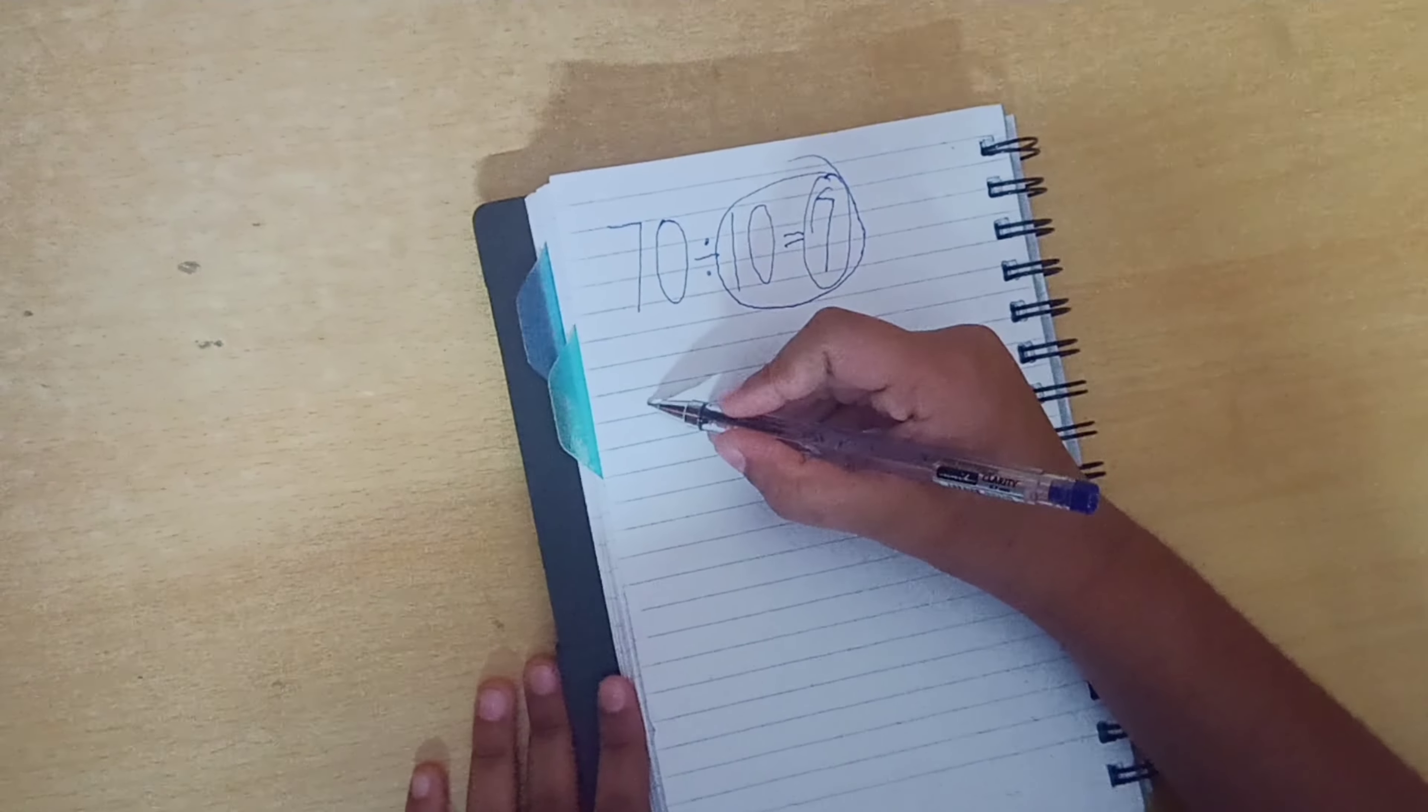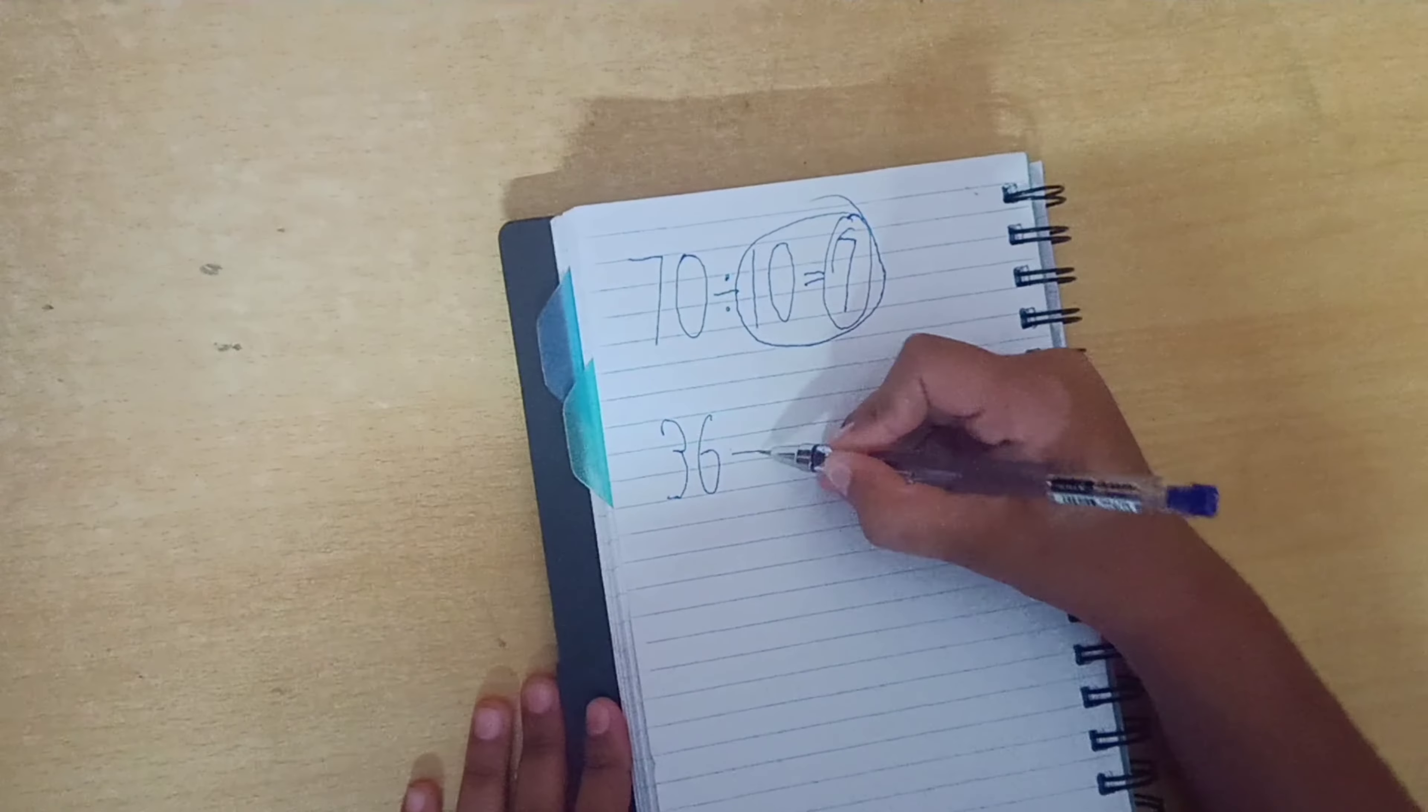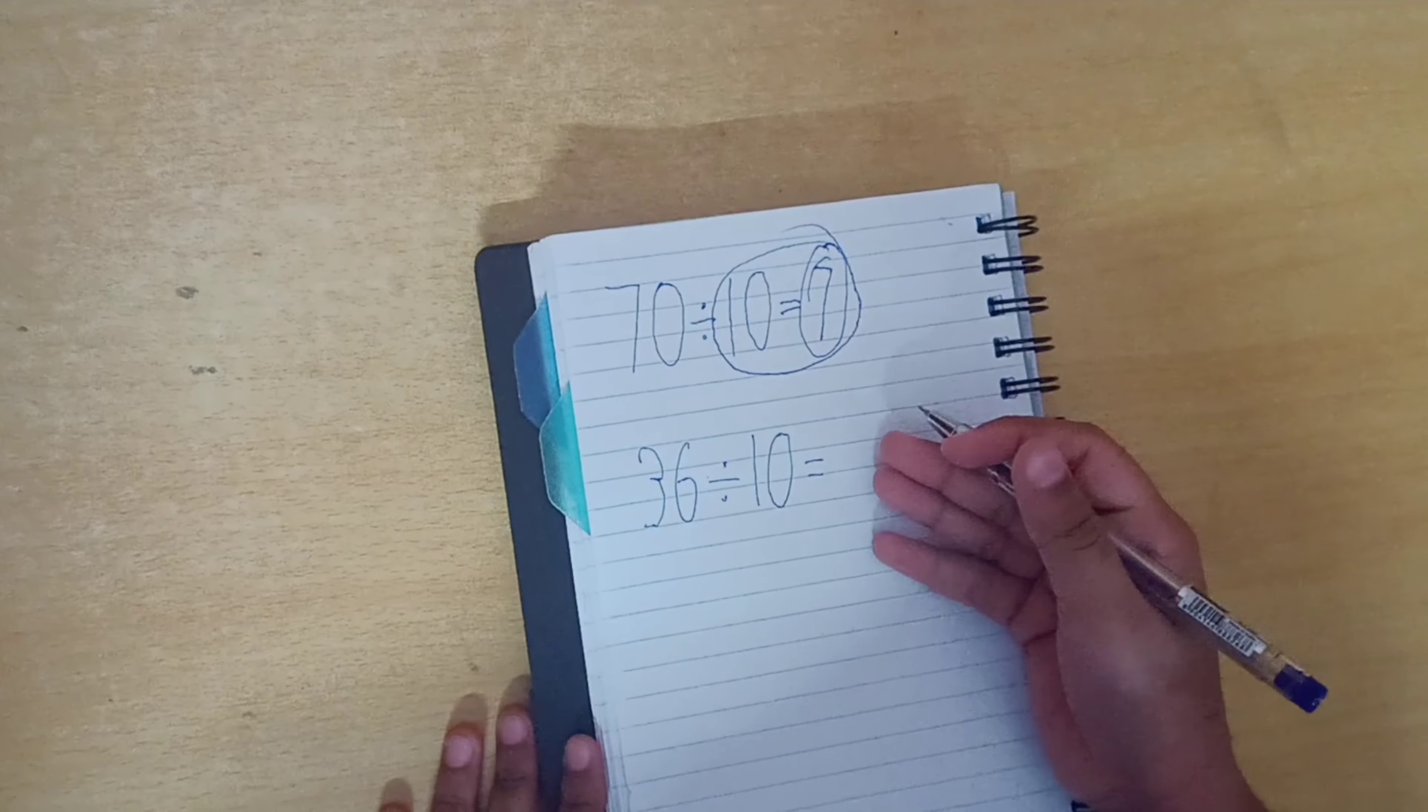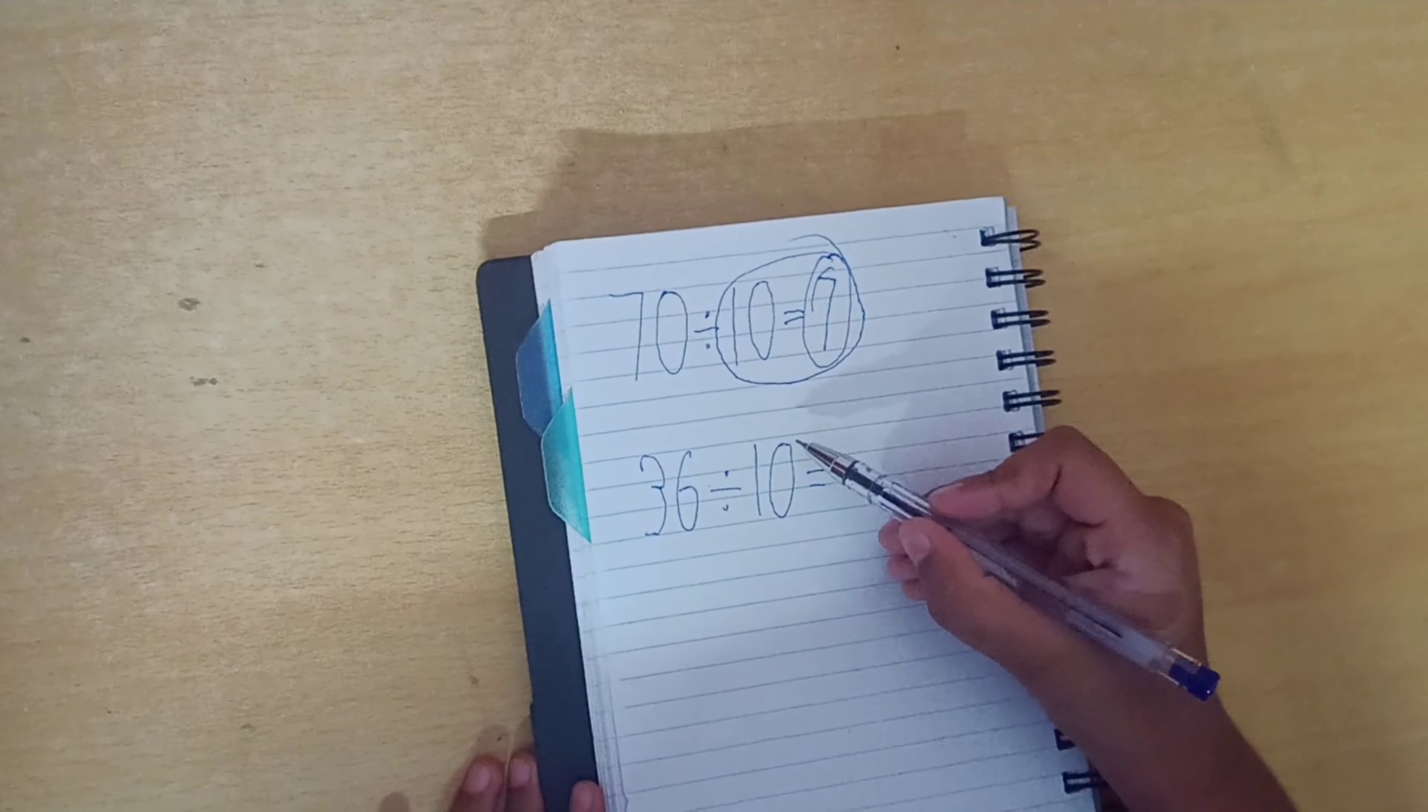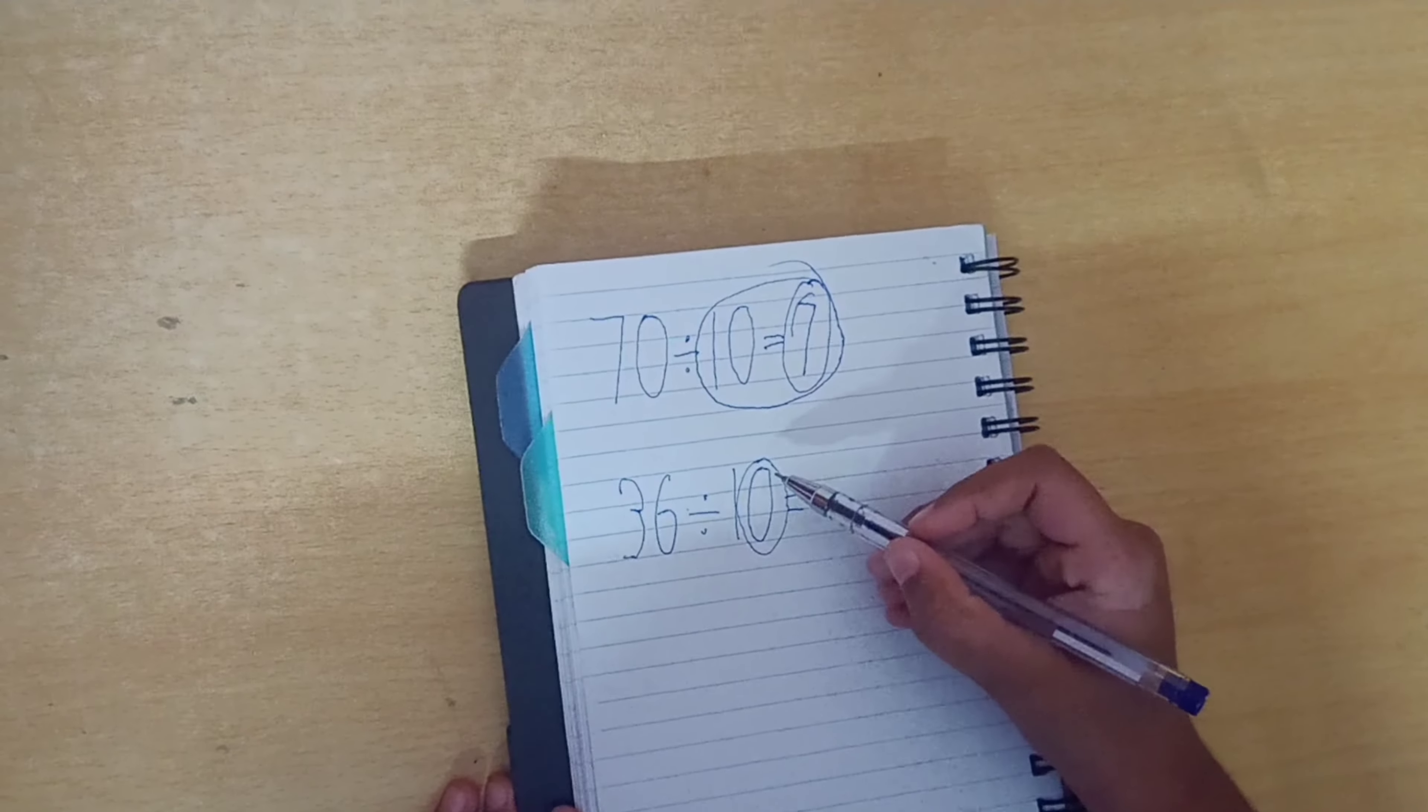Okay, the next is 36 divided by 10. Children, what will be the answer? Okay, let's check. There is one zero in the 10. So,